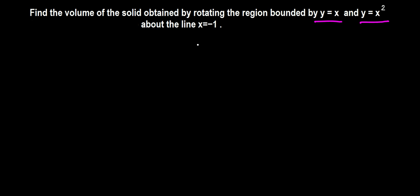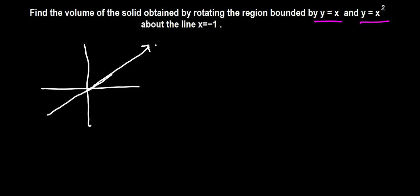Let's sketch these two curves. y equals x is just an identity line passing through the origin, and y equals x squared is a parabola. The region between these two curves intersects at the origin and at the point where x equals 1, y equals 1.